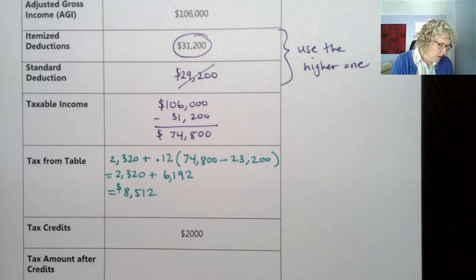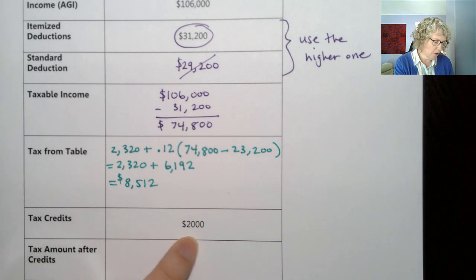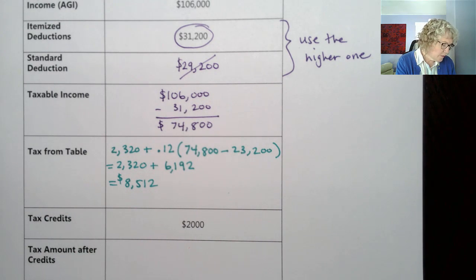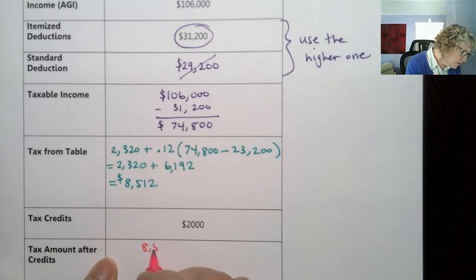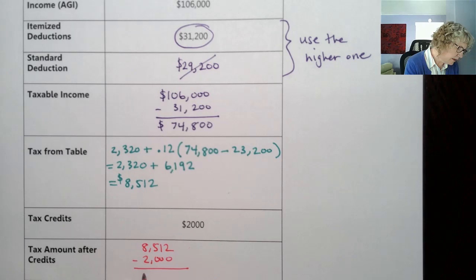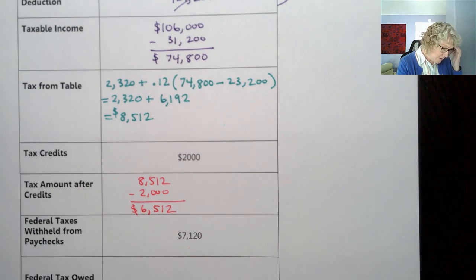So $8,512 is what they actually owe. But if you have tax credits, that's a wonderful thing because it subtracts dollar for dollar right from your tax. Subtracting a $2,000 child tax credit: $8,512 − $2,000 = $6,512. So now they only owe $6,512 in taxes.